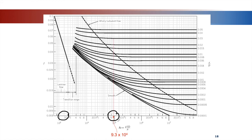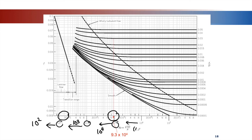The Reynolds number 9.3 times 10⁴ lies between 8 times 10⁴ and 1 times 10⁵. On the chart, 10³, 10⁴, 10⁵ are labeled; values between major gridlines are intermediate powers of ten. For 9.3 times 10⁴, interpolate between 8 times 10⁴ and 1 times 10⁵ to locate the precise position on the Reynolds number axis.